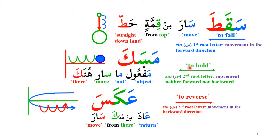Now let's look at what happens when seen is the first root letter. For example, 'sakata' means to fall — something falling down. Each Arabic letter has a meaning, and here you can read it as an abbreviation: 'Sarah min qimmatin' — from the top — and 'ta' is for 'hatha,' meaning coming straight down. So 'sakata' means to fall, with something falling from high above straight down to the surface of the earth.